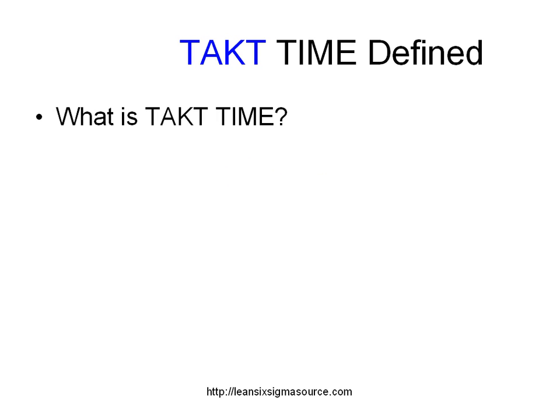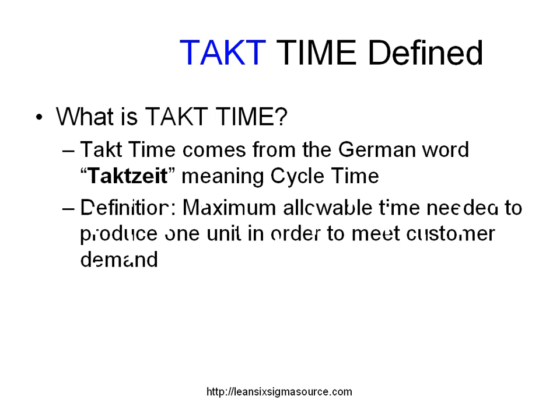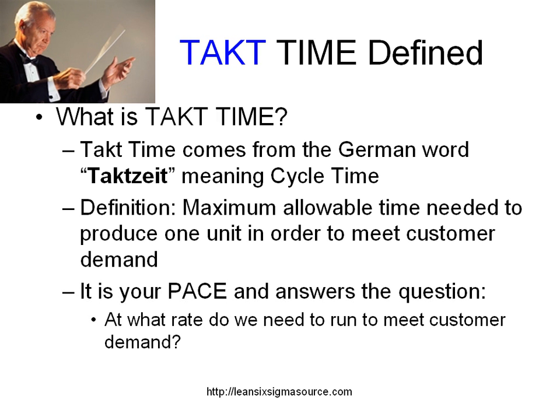What is Takt time? Takt time comes from the German word 'takt', meaning cycle time. The definition is the maximum allowable time needed to produce one unit in order to meet customer demand. It's often illustrated by the conductor of a symphony that determines the pace at which the symphony plays. It's your pace and it answers the question: at what rate do we need to run to meet customer demand?